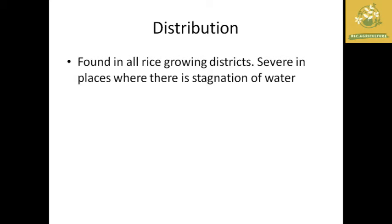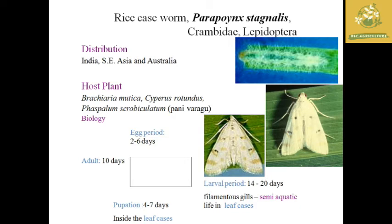Rice case worm distribution: found in all rice-growing districts, also in stagnant water areas. Worldwide: India, Southeast Asia, and Australia. Host plants include Panicum sp., Brachiaria mutica, and Cyperus rotundus. Biology: egg period 2 to 6 days; larval period 14 to 20 days. Special characteristic: filamentous gills make them semi-aquatic. They live in leaf cases. Pupal period is 4 to 7 days inside leaf cases. Adult life period is around 10 days with white wings with wavy black spots.